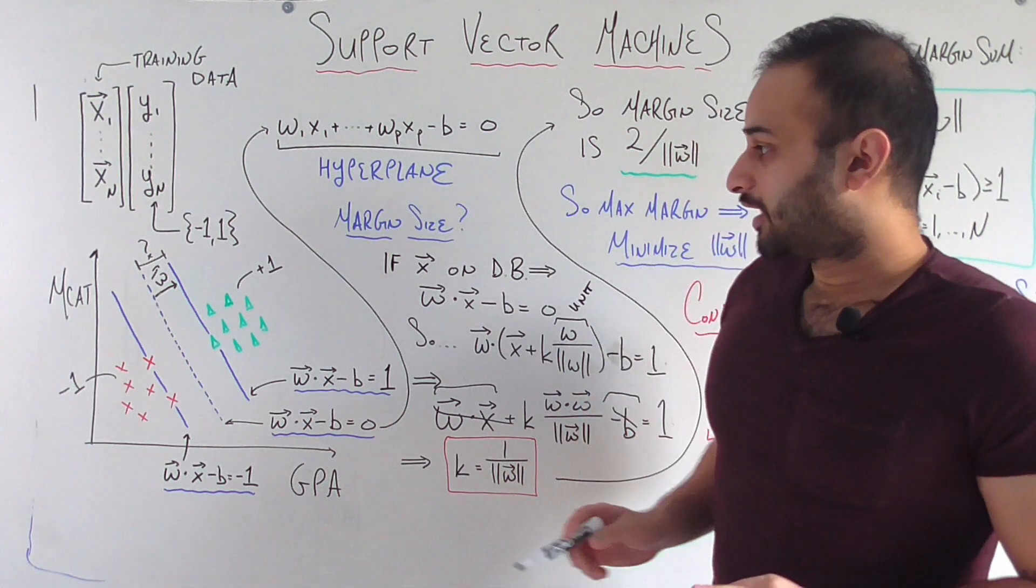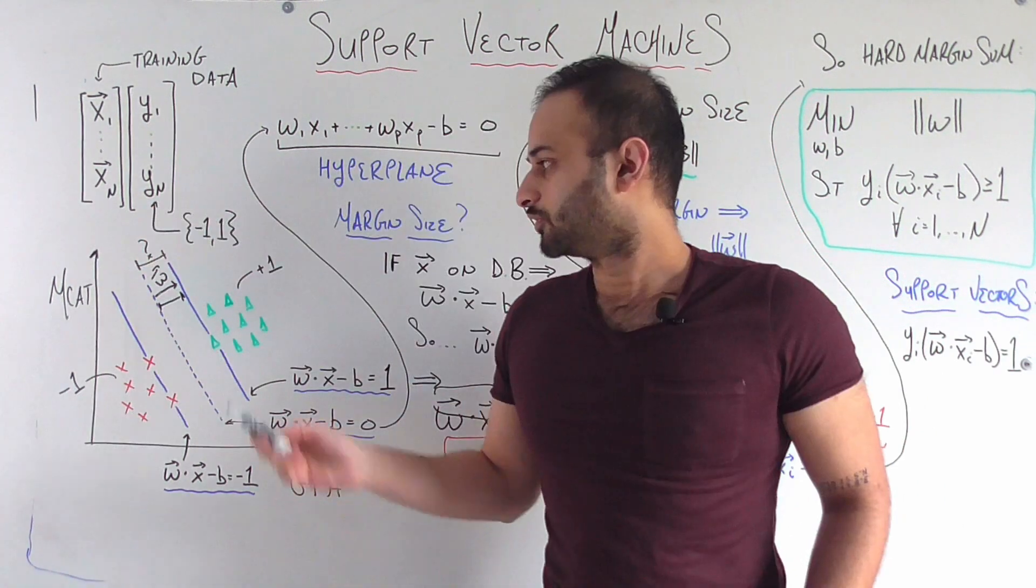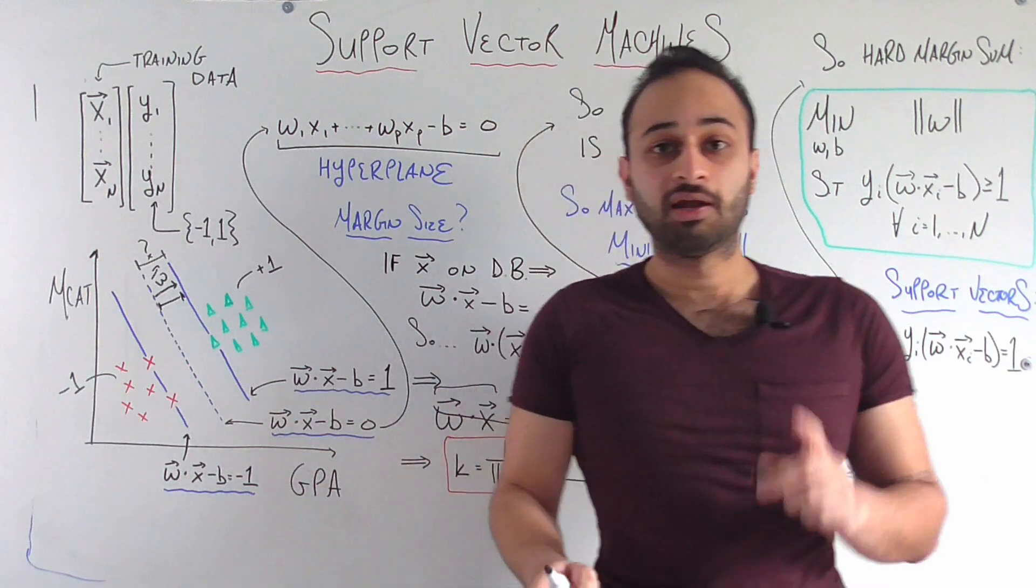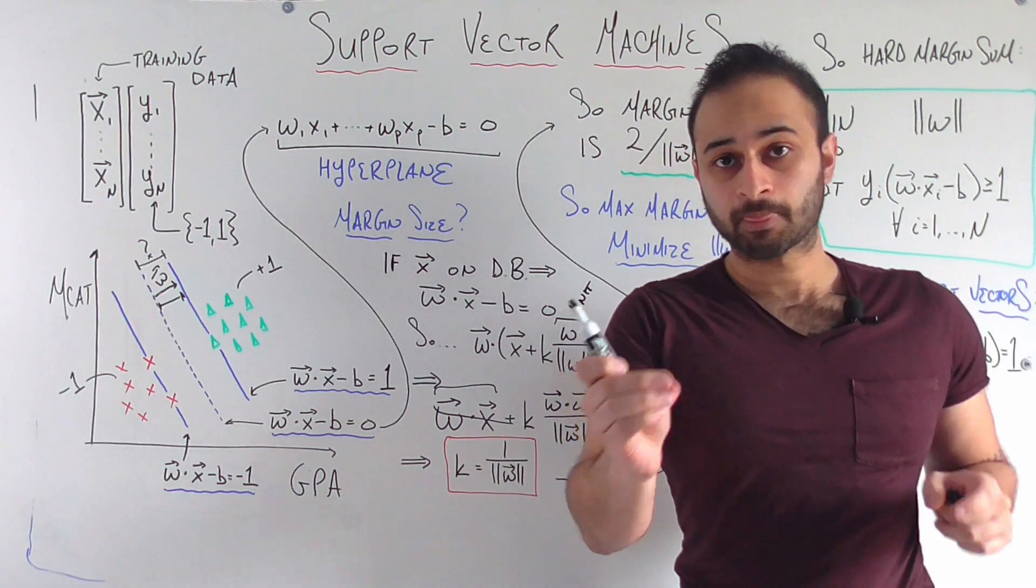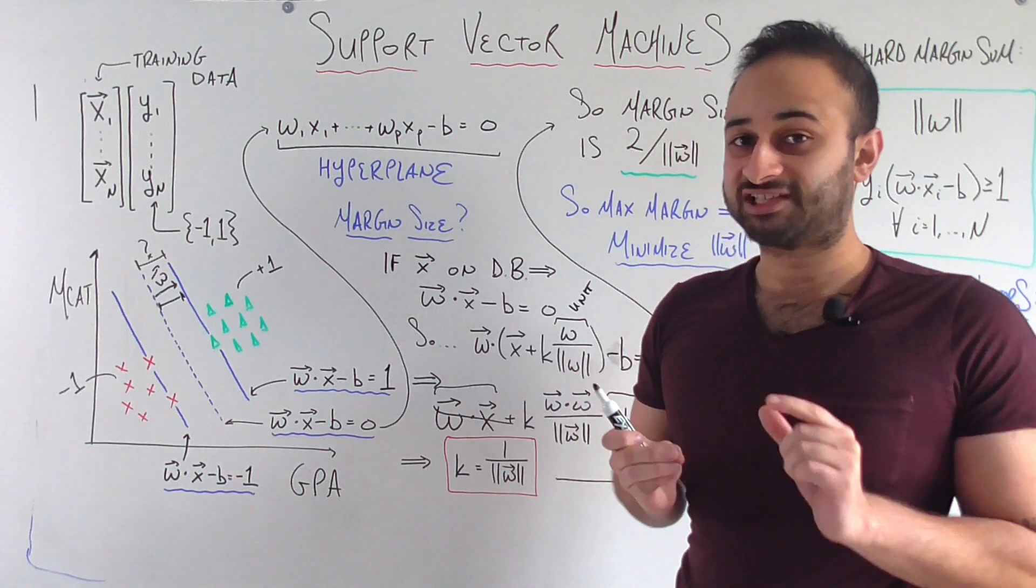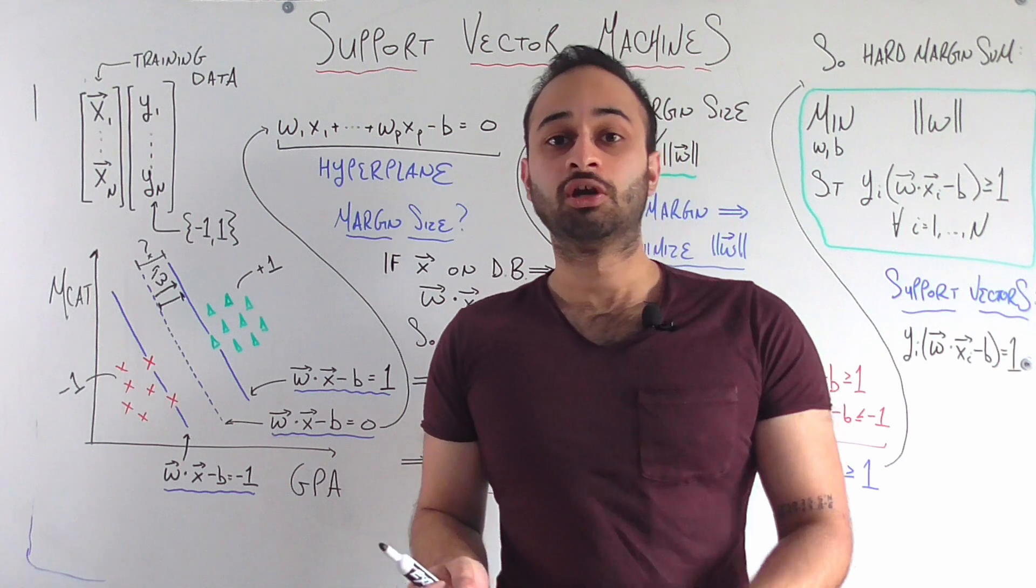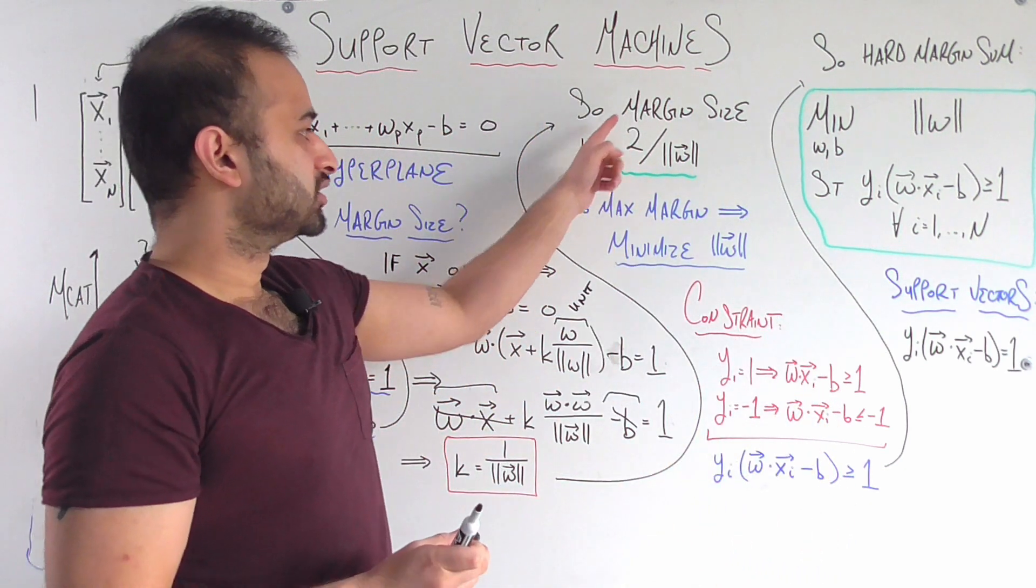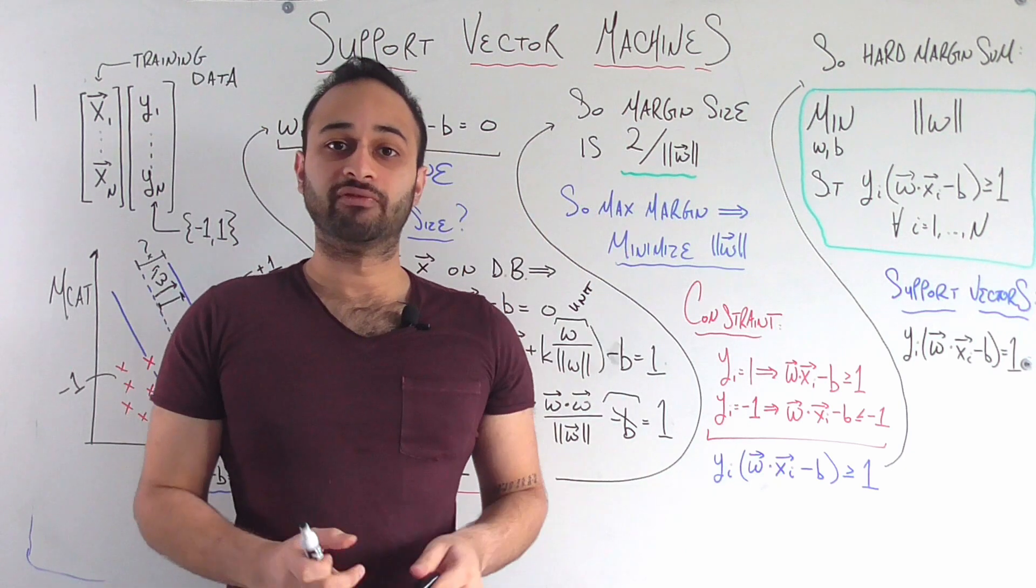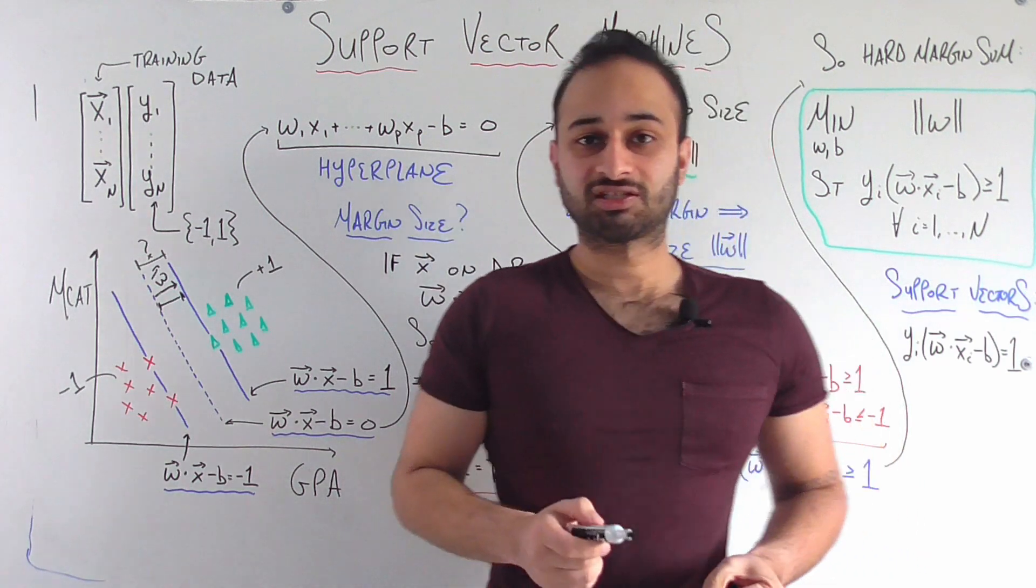All I did so far is say that this distance right here is 1 over the magnitude of w. This is important because now we know exactly the size of the margin because the margin is simply just twice that amount. So now we know that the margin size is 2 over the magnitude of the vector w, w again being this vector of weights that we are choosing.